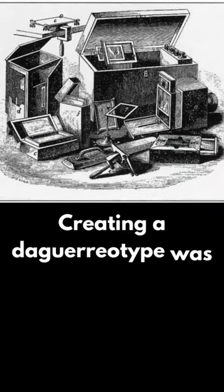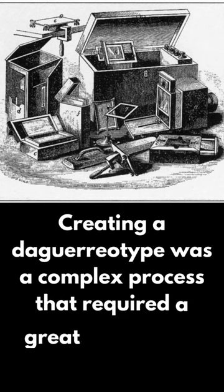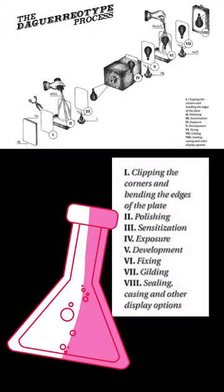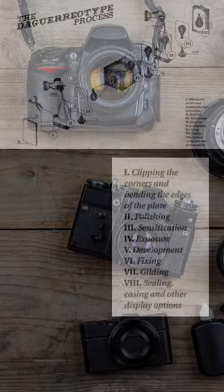Creating a daguerreotype was a complex process that required a great deal of skill and expertise. The photographer had to carefully prepare the plate, expose it to light, and then develop the image using a series of chemicals.